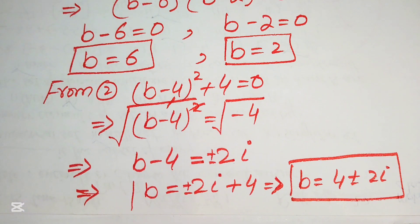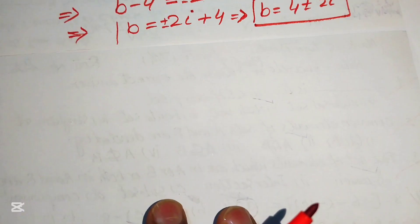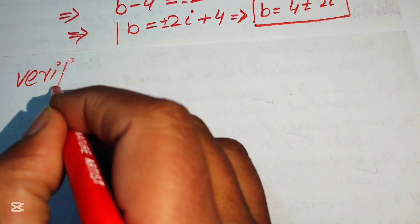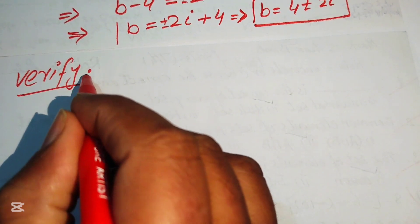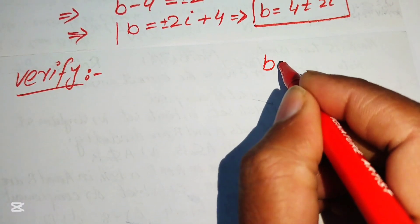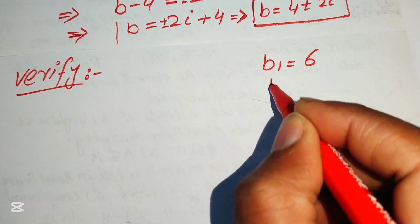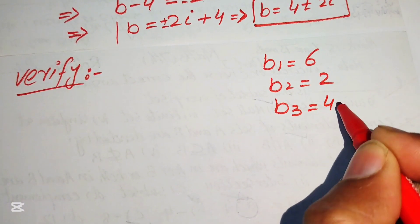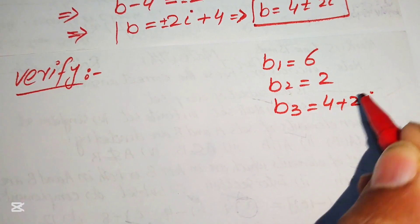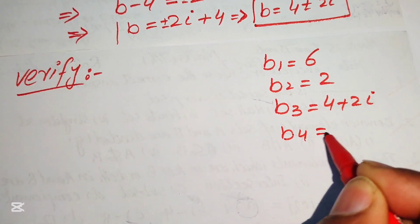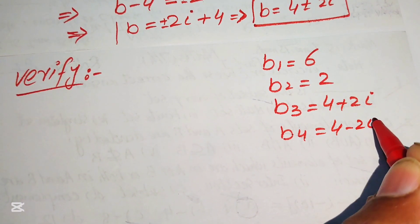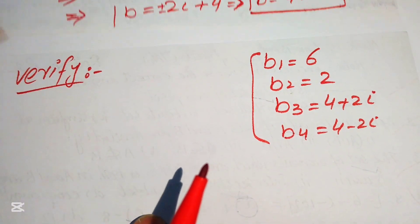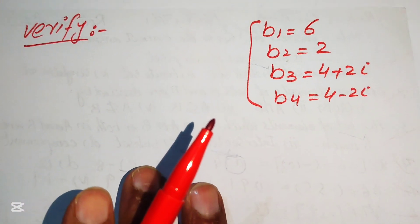These are the four roots of the given equation. We write: b1 equals 6, b2 equals 2, b3 equals 4 plus 2 iota, and b4 equals 4 minus 2 iota. Now we verify all four roots in the original equation.